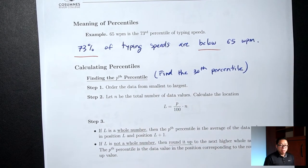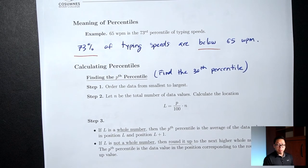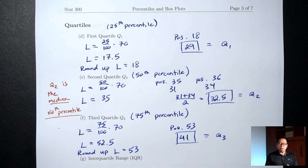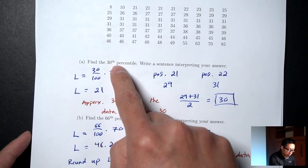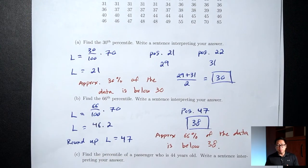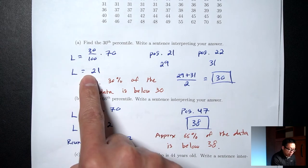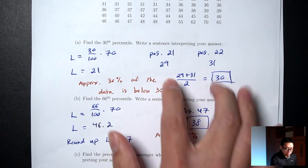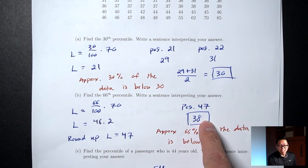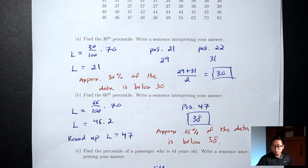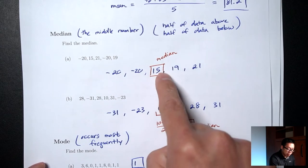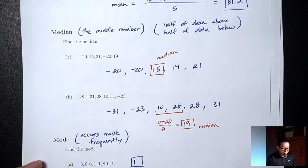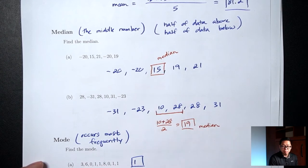Now that we have the formula for L, when you find the 50th percentile you're really finding the median, so the L formula gives you a direct way to get to the middle number. The reason there are two situations in step three is the same reason median had two cases: sometimes there's one middle number, sometimes there are two and you average them.